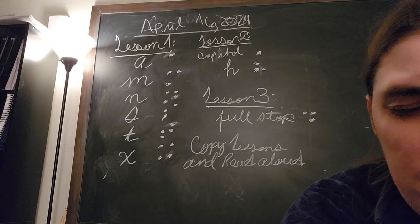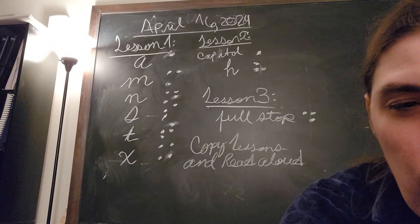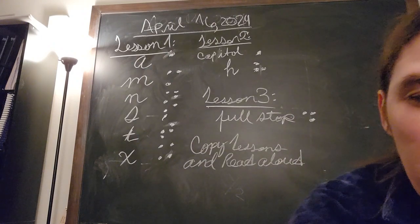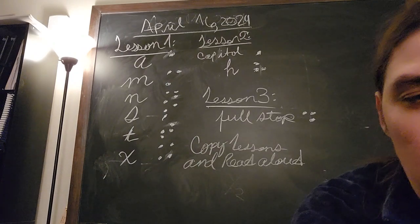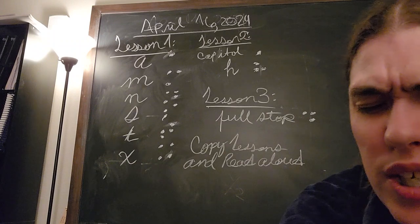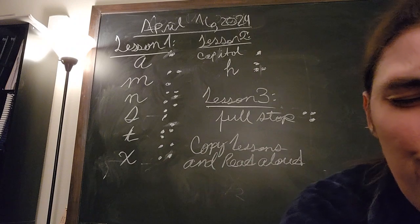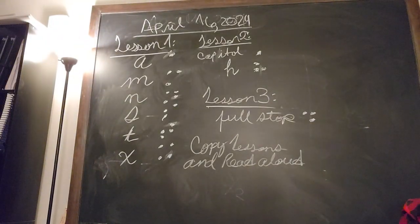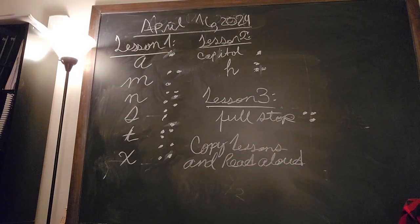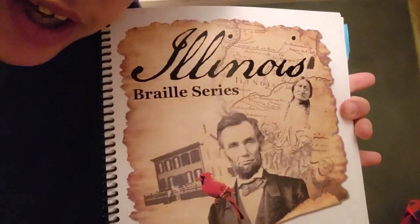And then after that, we did a couple lessons in what we're going to be working through. So before we were working, we were just doing reading through the a book called the Illinois Braille series or something like that. It's the one that has Lincoln on the cover. Let me pull that out. It was this book that we were working through.